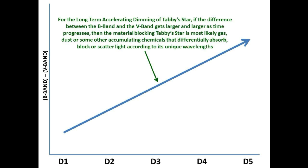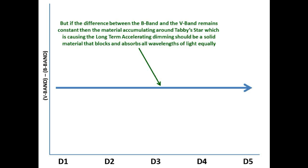So for the long-term accelerating dimming of Tabby's Star: if the difference between the B-band and the V-band gets larger and larger as time progresses, then the blocking material is most likely gas, dust, or some other accumulating chemical that differentially absorbs, blocks, or scatters light according to its wavelength. But if the difference between the B-band and the V-band remains constant, then the material accumulating around Tabby's Star is a solid material that blocks and absorbs all wavelengths of light equally.